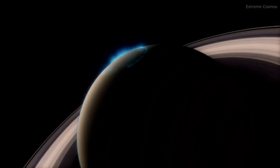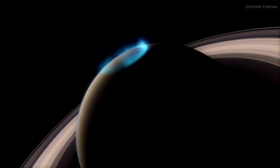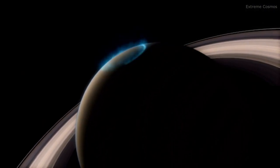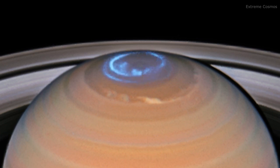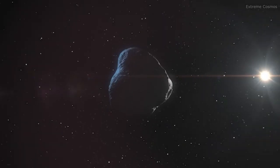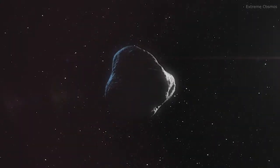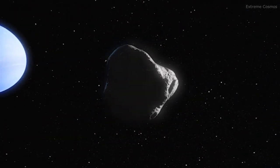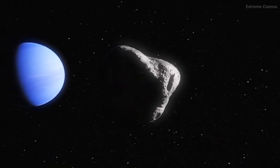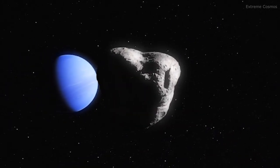Hubble has also observed the auroras on several of our solar system's planets, including Saturn and Uranus. The telescope's data were also used to study the origin of the smallest known moon orbiting the planet Neptune, known as Hippocamp.